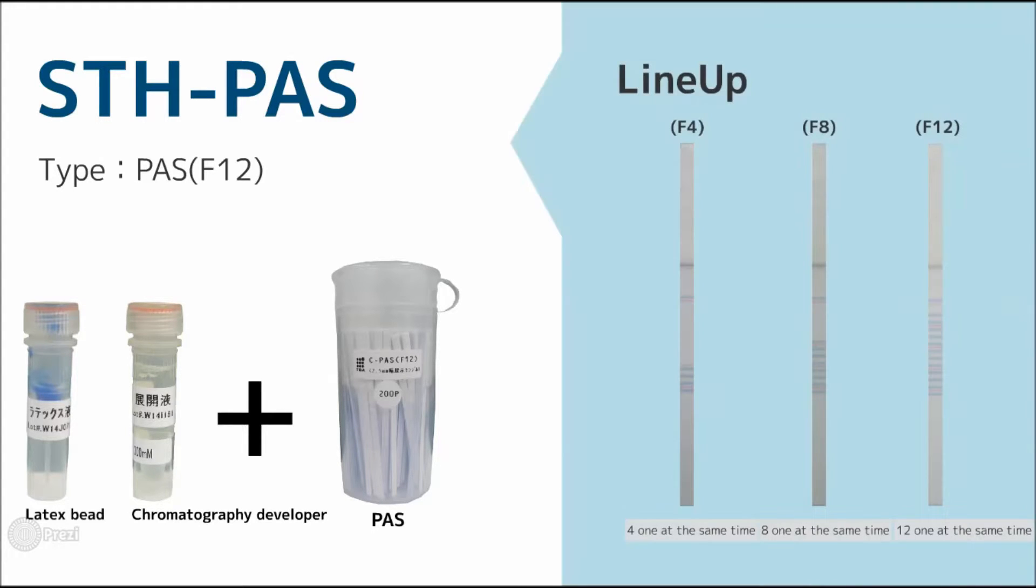We have three kinds of STH Pass for detecting the genic quantity. F4, 4 genes. F8, 8 genes. And F12, 12 genes.